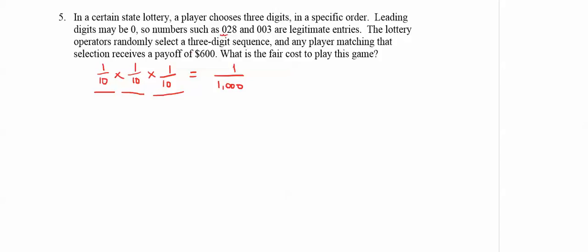Now, if we receive a payoff of $600, what we're going to do is set up an expectation table where, in this case, we can either win or we can lose. We need to look at the value of winning. So if I win, I win a payoff of $600.